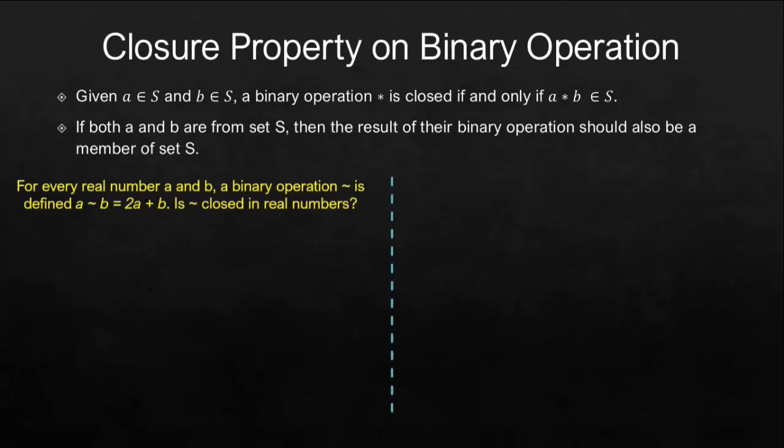If we found an example or a value for A and B that when operated using this tilde results to a number that is not real, then this binary operation is not closed.